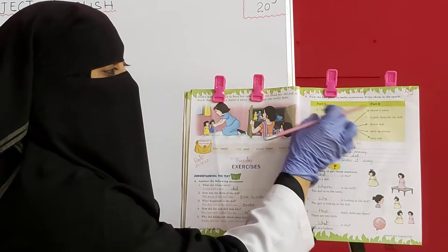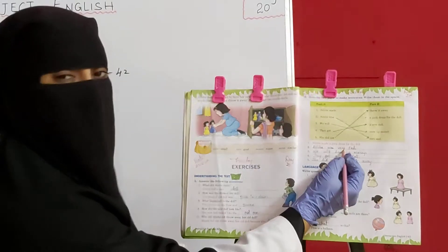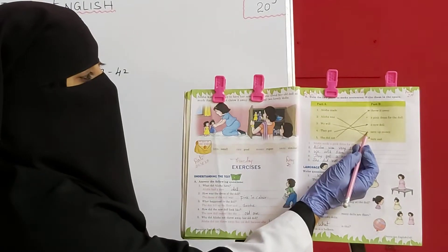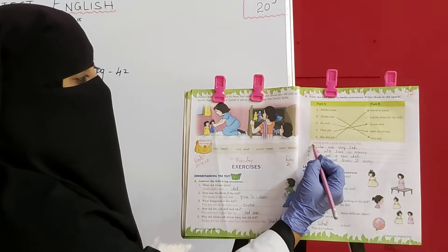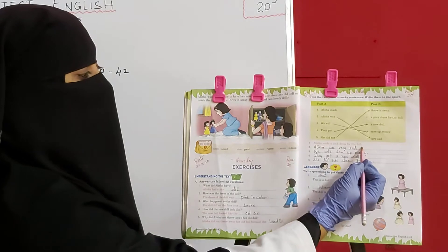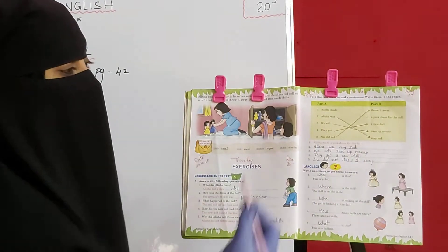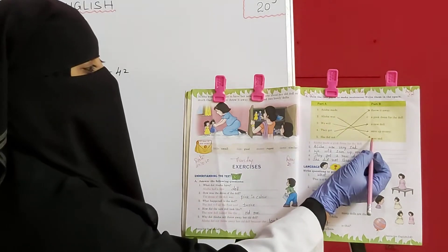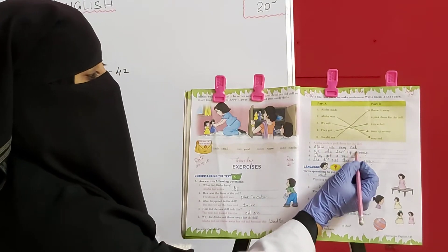Okay kids, now next one. Abhi aapko yeh jo sentences humne match kiye hain, woh sentences ko yahaan copy karna hai. Like: Alicia made a pink dress for the doll. Toh aapko yahan sentence likhna hai: Alicia made a pink dress for the doll. Next one: Alicia was very sad. Humne match up kiya tha na yeh sentence ko. Alicia was very sad.